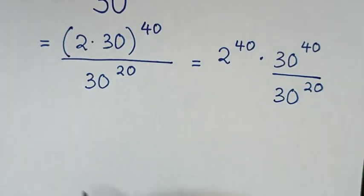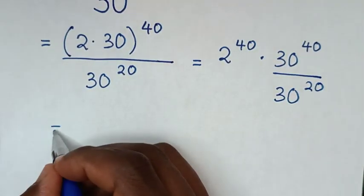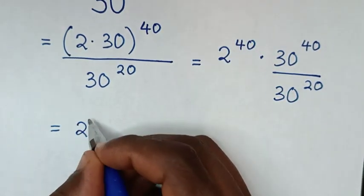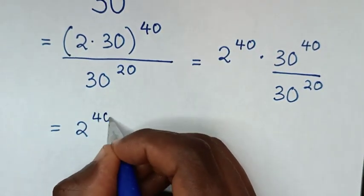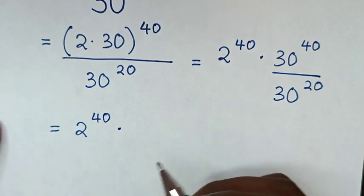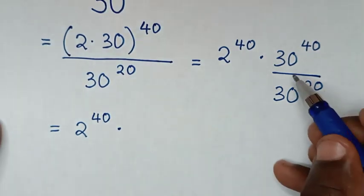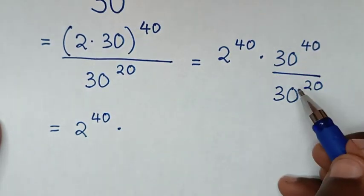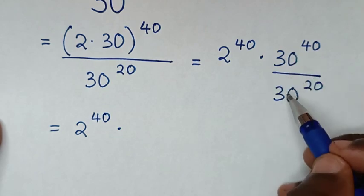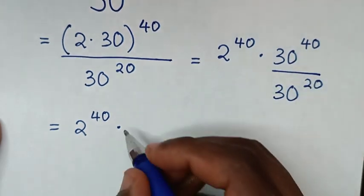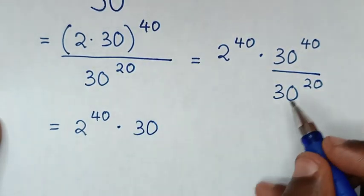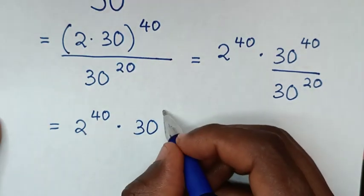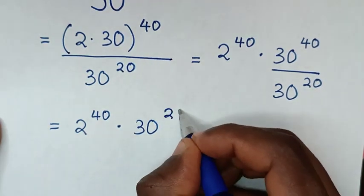Then in the next step, we have 2 power of 40 times a division of exponents with the same base of 30. So it will be base 30 with power of 40 minus 20, which is power of 20.